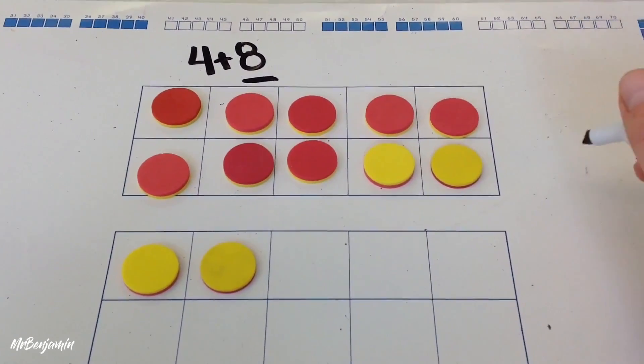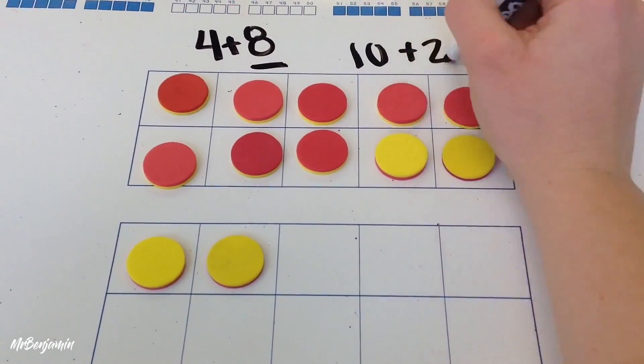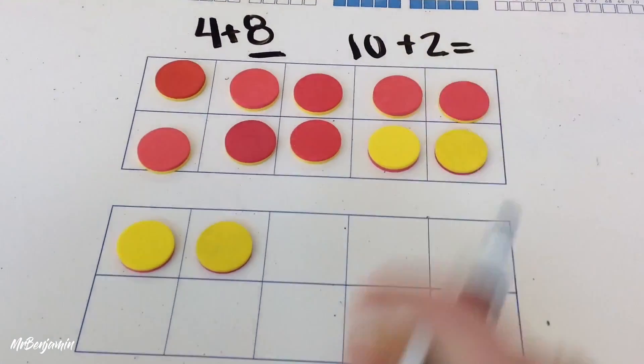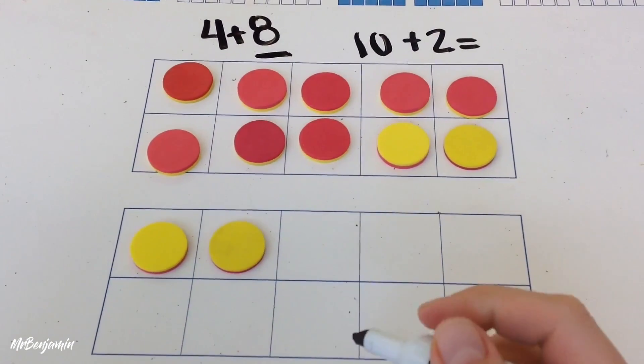Now, I have 10 plus 2. 10 and 2 more. Now I can add quicker.